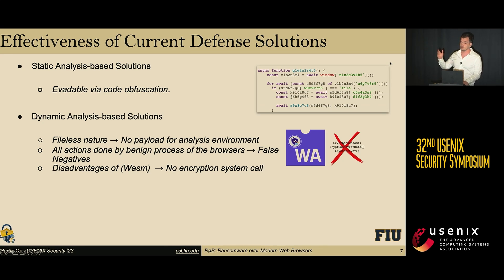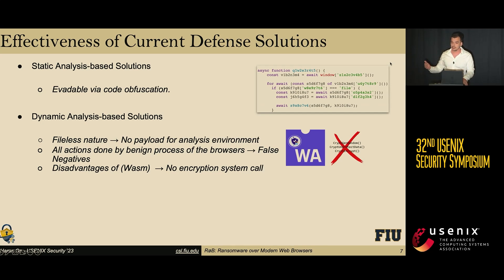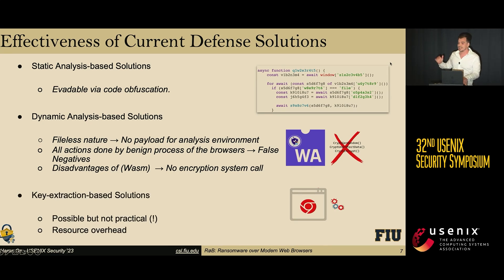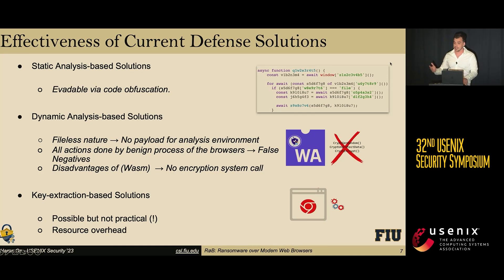Lastly, as ROP utilizes a WebAssembly-based encryption module to encrypt user files, it does not introduce any encryption-related system costs on the user's system. While extracting the key during a browser-based ransomware attack is theoretically possible by taking heap snapshots of the web application, it is not practical, as these heap snapshots might introduce resource overhead on the user's system.